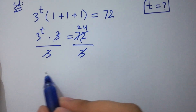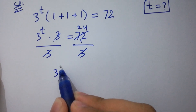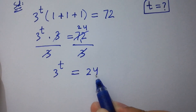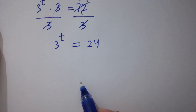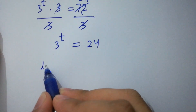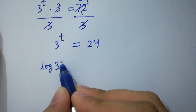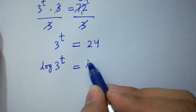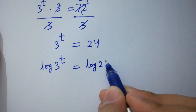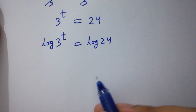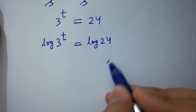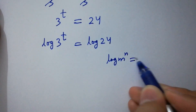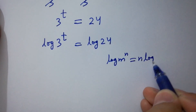Then we have 3 to the power t equal to 24. Take log on both sides: log 3 to the power t equals log 24. As we know, log m to the power n equals n log m.